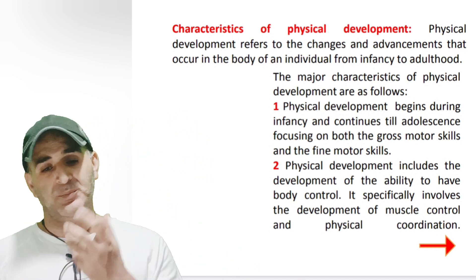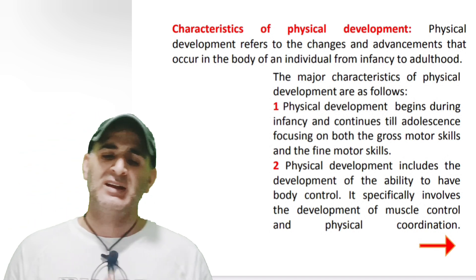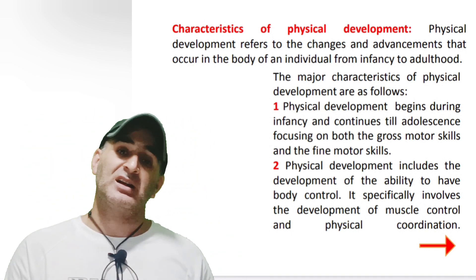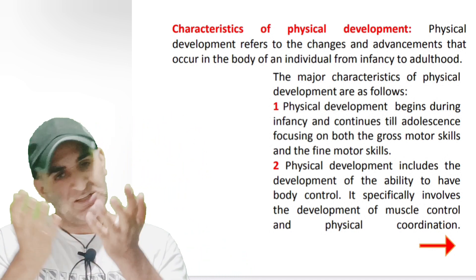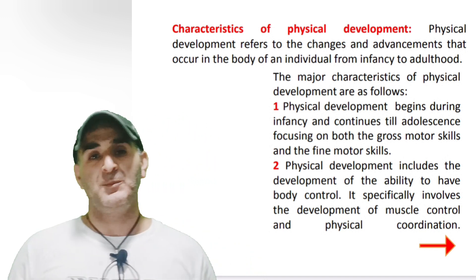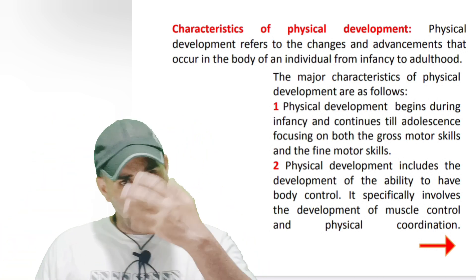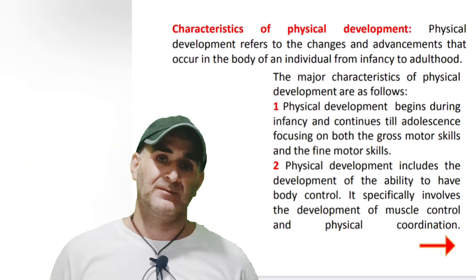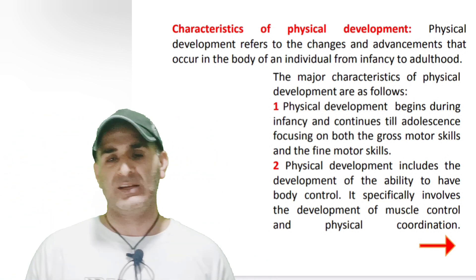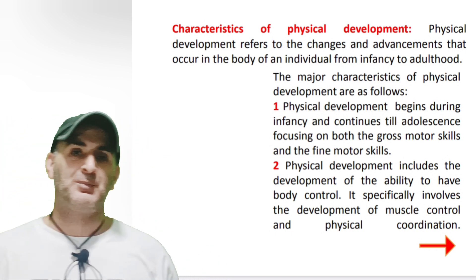Number one: Physical development begins during infancy and continues till adolescence, focusing on both gross motor skill development and fine motor skill development. As we all know, development is a continuous process — it starts from birth, from infancy, and ends at death. The first and primary period of growth and development in a human child is infancy.